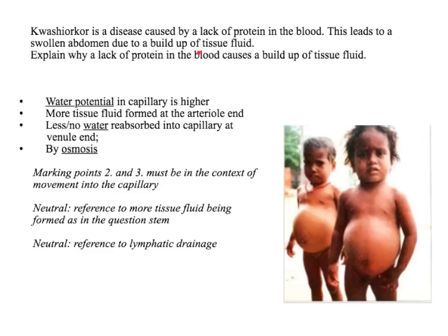Here we've got kwashiorkor — a lack of protein, a lack of large plasma proteins in the blood — which results in a large swollen abdomen, which is actually a buildup of tissue fluid. The water potential is going to be higher inside the capillary because there are fewer plasma proteins lowering it — it's less negative. As a result, you get more tissue fluid formed at the arterial end, but more importantly, you've got less water being reabsorbed into the capillary by osmosis, because you don't have as negative a water potential inside the capillary.